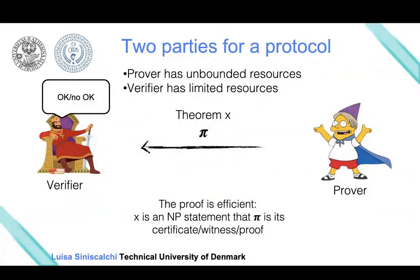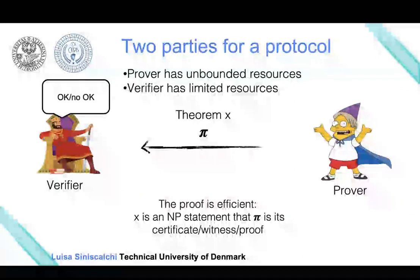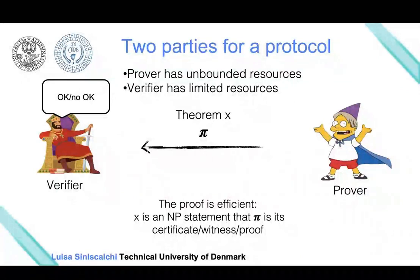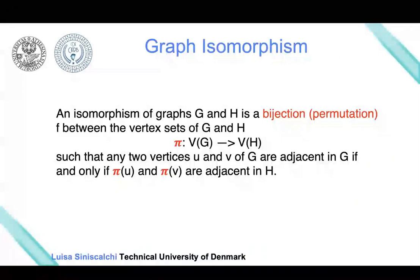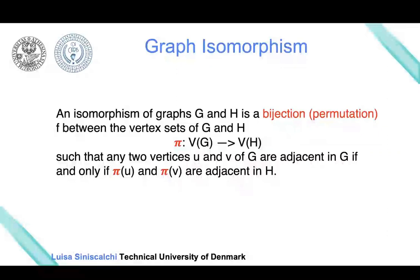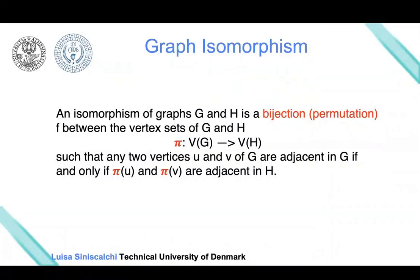The concept can be a bit abstract, so let's see an example of what an NP problem is. I am going to introduce a class of problems called graph isomorphism. In this type of problem, we consider two graphs, G and H.